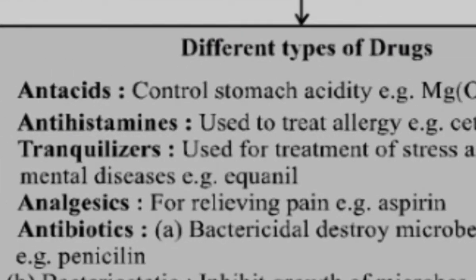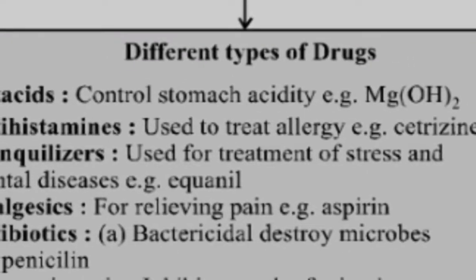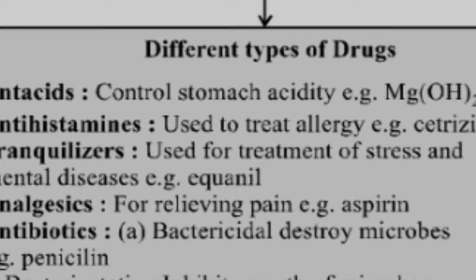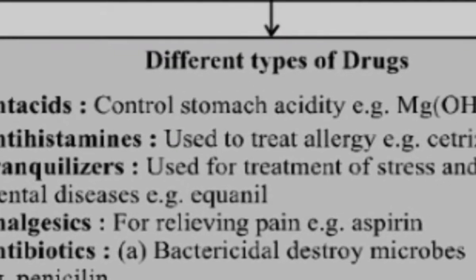Different Types of Drugs — there are lots of types of drugs and this section is very important for competitive exams. Antacids control stomach acidity, like magnesium hydroxide. Antacids are drugs taken to control acidity in our stomach. Since stomach acidity means increased acid, a base is needed to neutralize it. Magnesium hydroxide, being a base, neutralizes the acid through an acid-base reaction, giving relief from acidity.